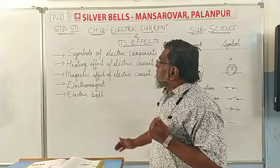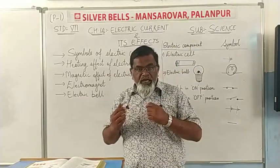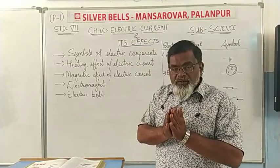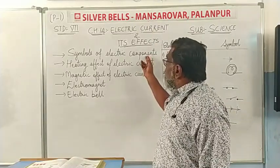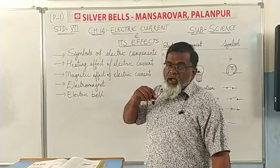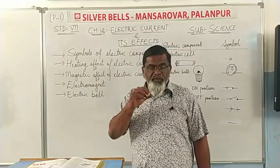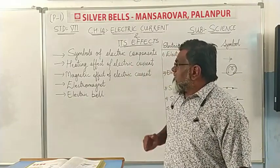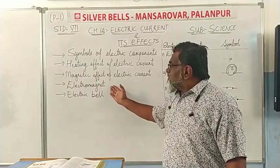In this chapter, first we are going to study about the symbols of electric components. In part two, we will study about the heating effect of electric current — when electric current passes or flows, it generates heat, so we will study what the effects of that are. And in the third part, we are going to study the magnetic effect of electric current, electromagnets, and the electric bell.